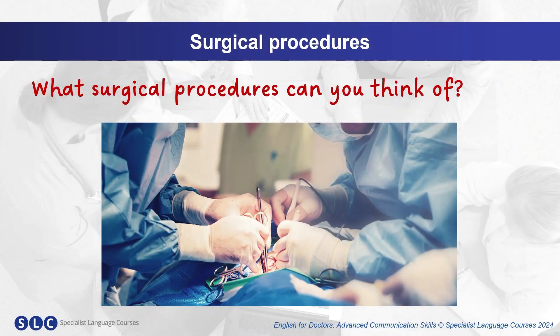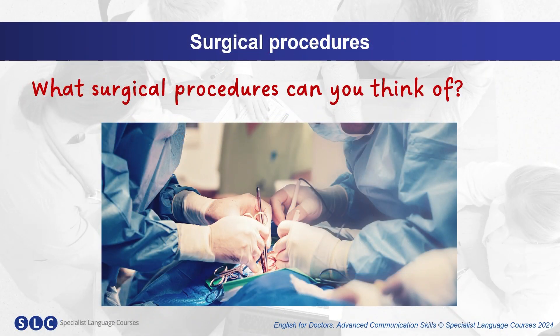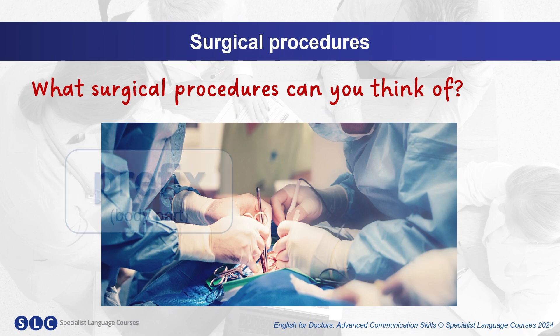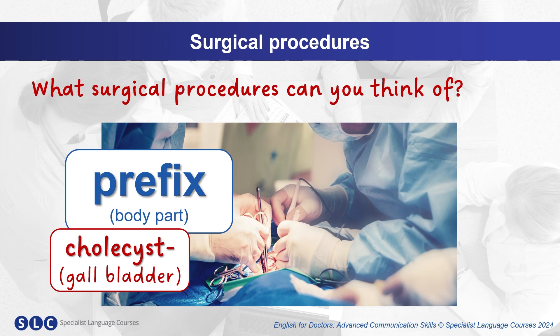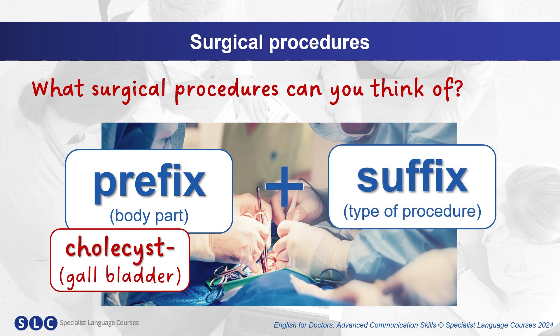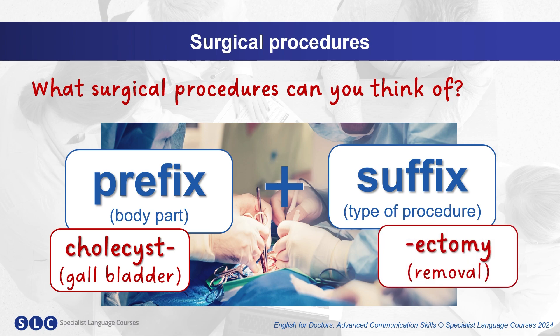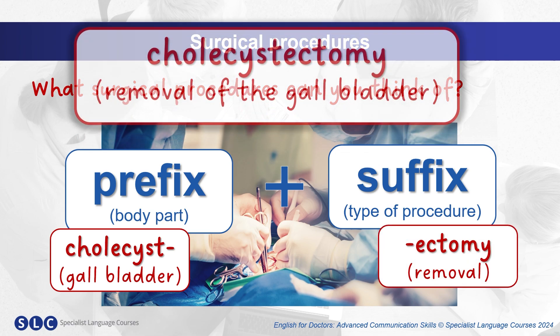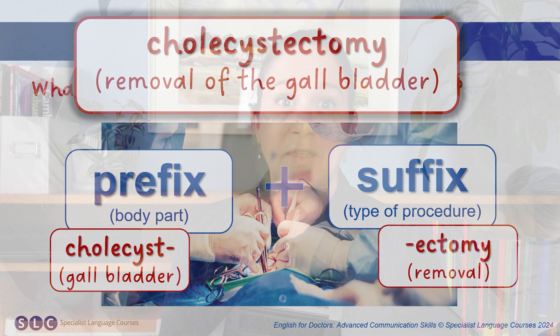What other surgical procedures can you think of? Surgical procedures are usually formed with the prefix of a body part — for example, cholecyst, meaning gallbladder — plus a suffix to describe the type of procedure — for example, ectomy, meaning removal. So let's take a look at some prefixes and suffixes.